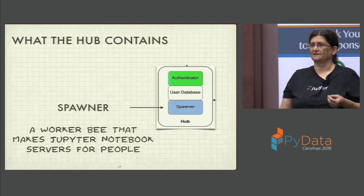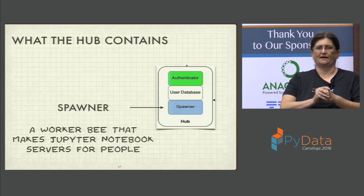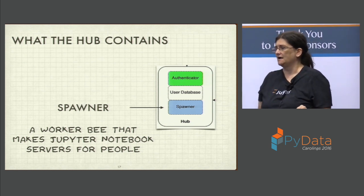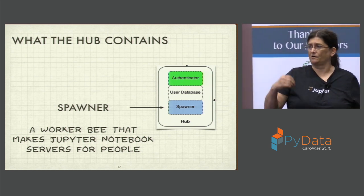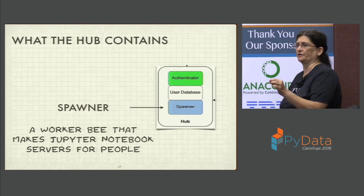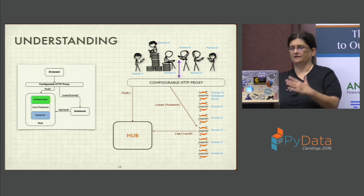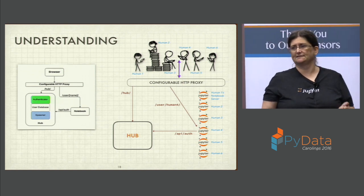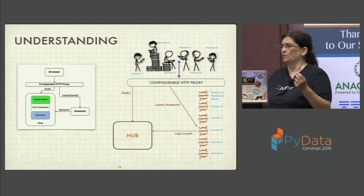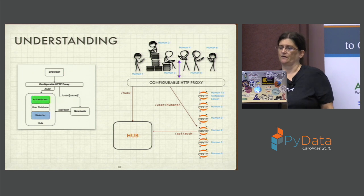The spawner is the worker bee that, as it gets requests from the Hub and other components, goes out and spins up individual single-user notebook servers — one here, one there, one for you over here. Those could be in Docker containers, on the same physical system, or on a different system entirely. There are different spawners with different parameters. Putting it all together, you have a conceptual view and Min's block diagram. With a group of six users, you get six individual notebook servers, each with their own URL.